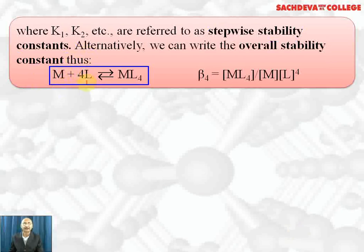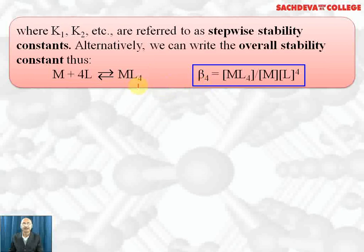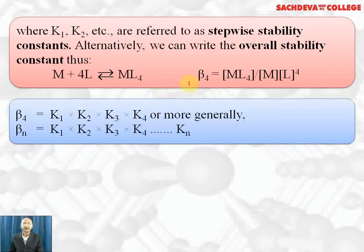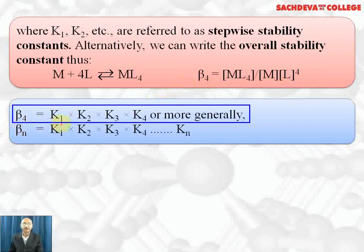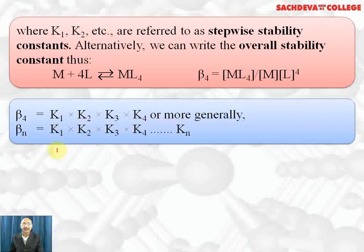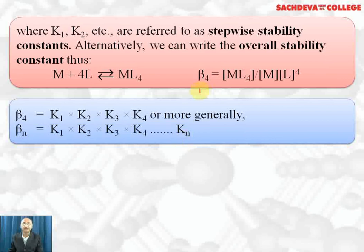Alternatively, we can write the overall stability constant, where the metal reacts with four ligands in one step to form ML₄. Here beta₄ represents the equilibrium constant for this formation and equals [ML₄] / ([M][L]⁴). The relationship between the overall and stepwise stability constants is: beta₄ = k₁ × k₂ × k₃ × k₄. In general, if there are n steps, then betaN = k₁ × k₂ × k₃ × ... × kN.